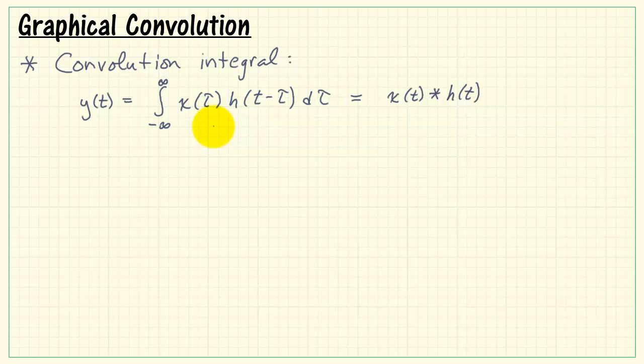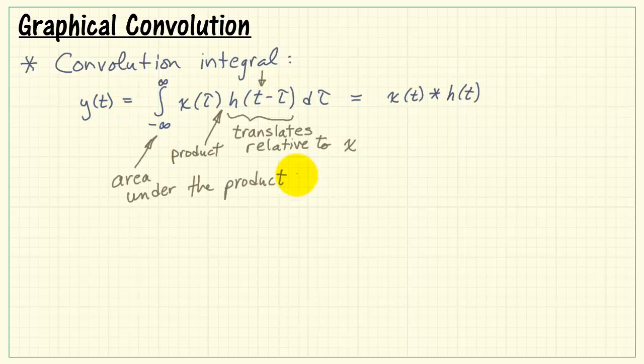x is our system input, h is the system's impulse response. We see that the argument is translating h relative to our signal x, and it translates using the variable t. We see that we're forming the product of the two, and then integration can be interpreted as finding the area underneath this product.